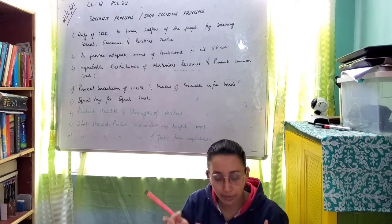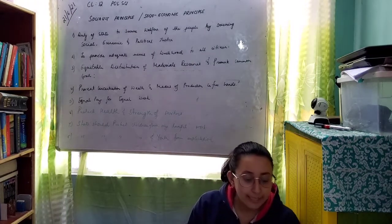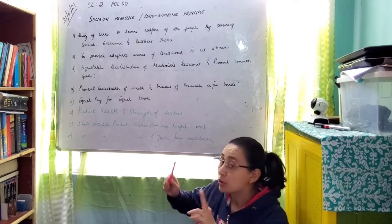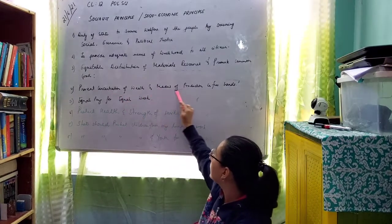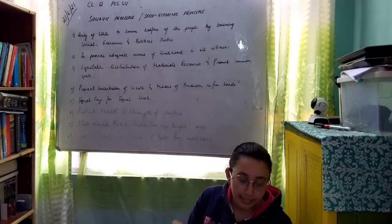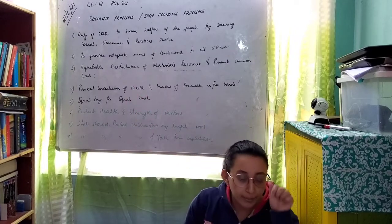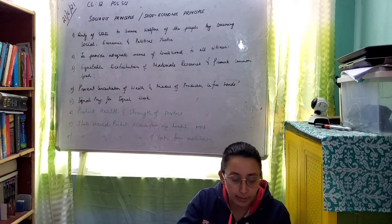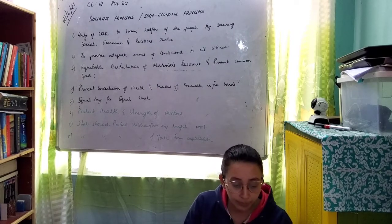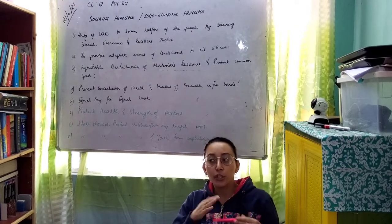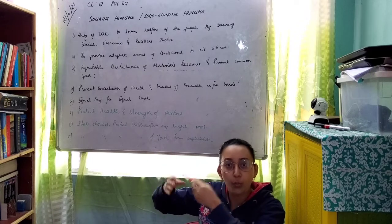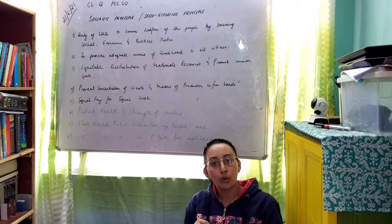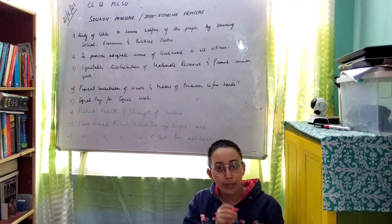Principle four: the state should prevent concentration of wealth and means of production in few hands. If wealth is concentrated in a single person or a few people, it is the duty of the government to prevent this. Otherwise, the rich become richer and the poor become poorer, and this affects the general development of the country. India follows socialist principles, which favor public ownership over private ownership.